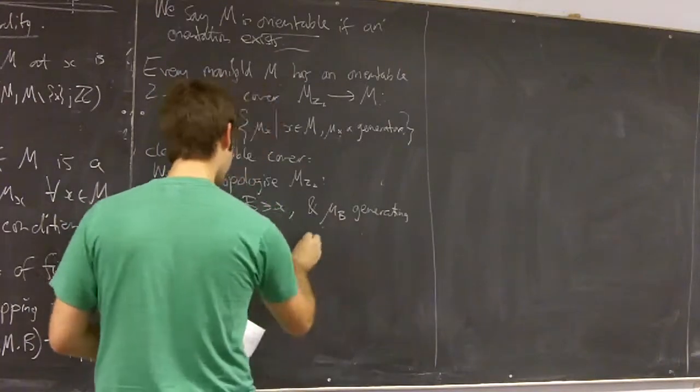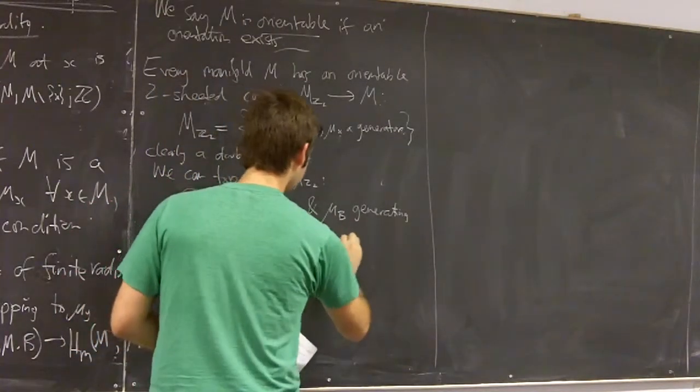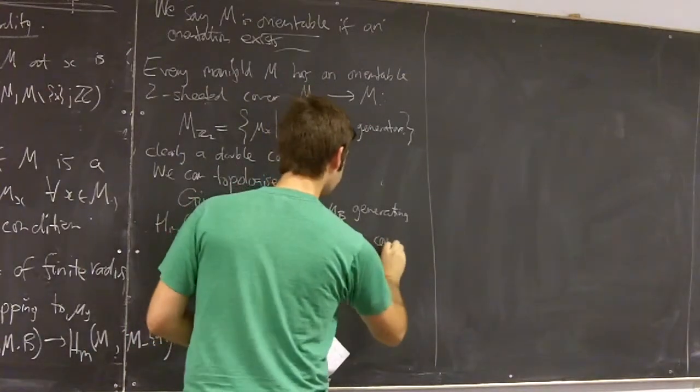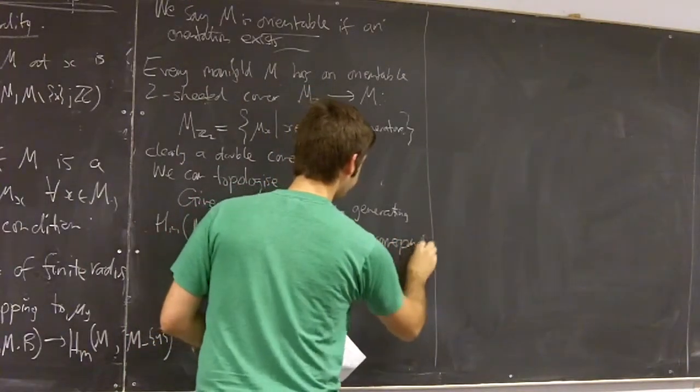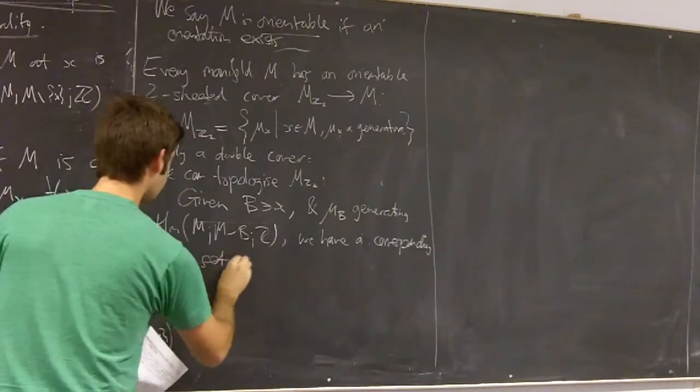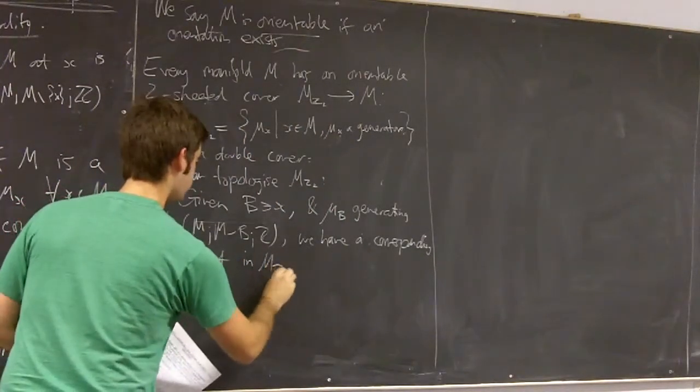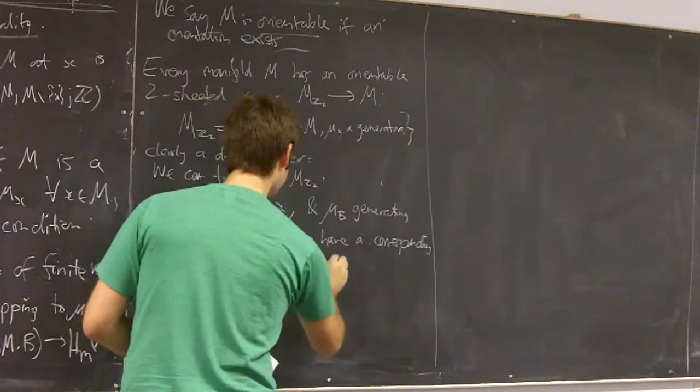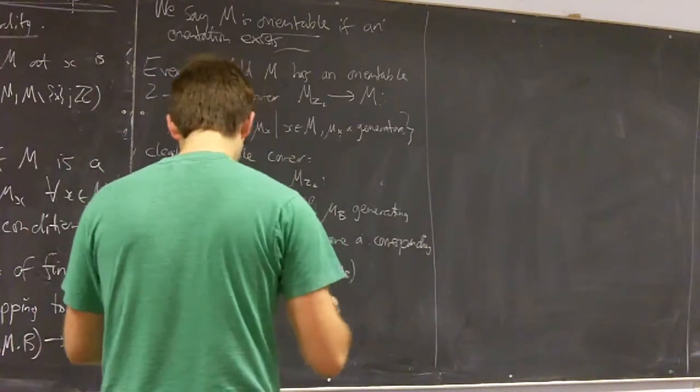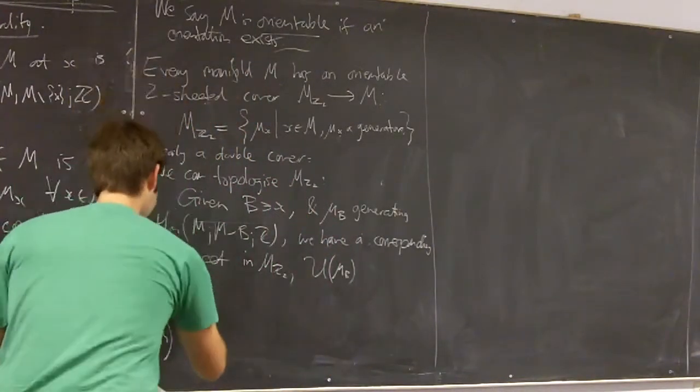we have a corresponding open set in the double cover I'm going to call this just U(μ_B) and this is